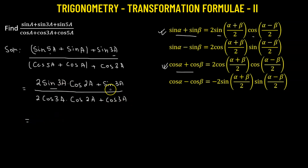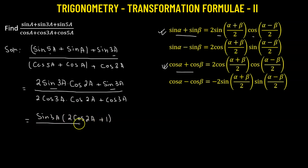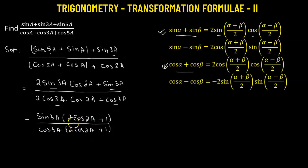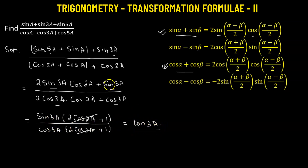Now we take sine of 3a as the common factor in the numerator, giving sine of 3a times (2 cosine of 2a plus 1). In the denominator, we take cosine of 3a as the common factor, giving cosine of 3a times (2 cosine of 2a plus 1). The factor (2 cosine 2a + 1) cancels from numerator and denominator, leaving sine 3a over cosine 3a, which is tangent of 3a. So tan(3a) is the value of the given trigonometric expression.